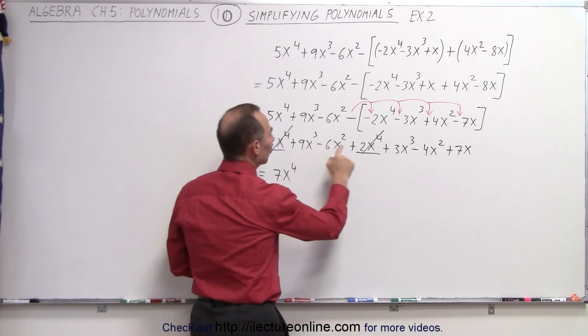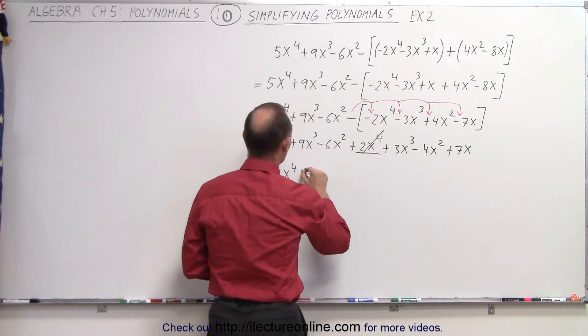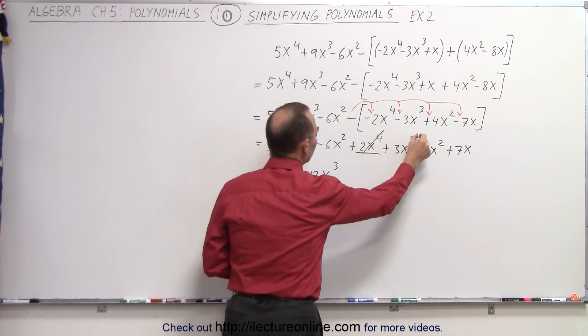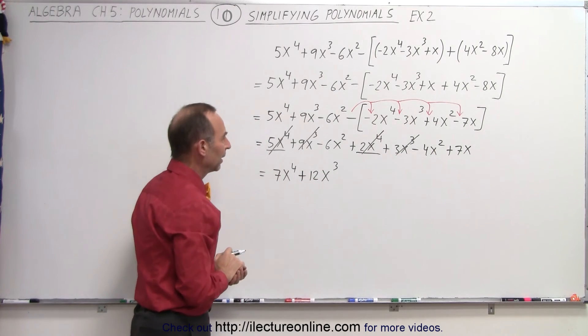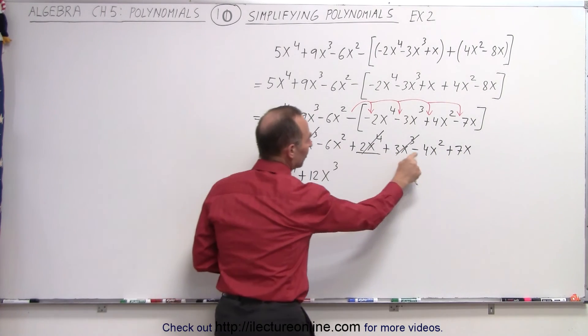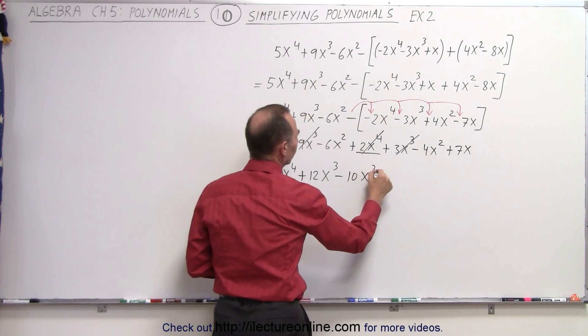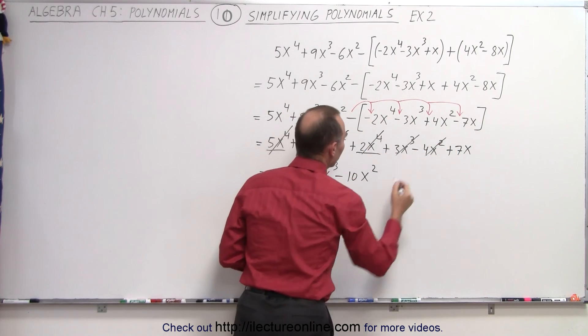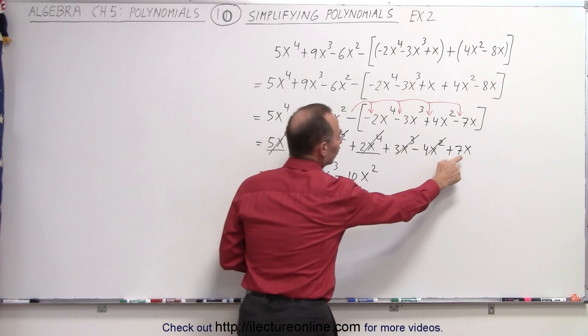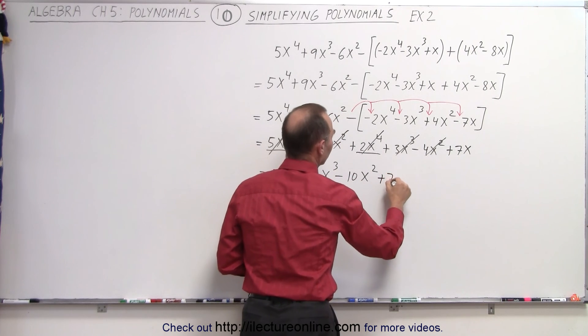Now we have two x cubed terms. 9 plus 3, that gives us plus 12x cubed. And now we can get rid of those two because we've already added them. The x squared terms have a minus 6 minus 4 that becomes a minus 10x squared. So now we've gotten rid of those. And we have a single x to the 1st term that becomes plus 7x.